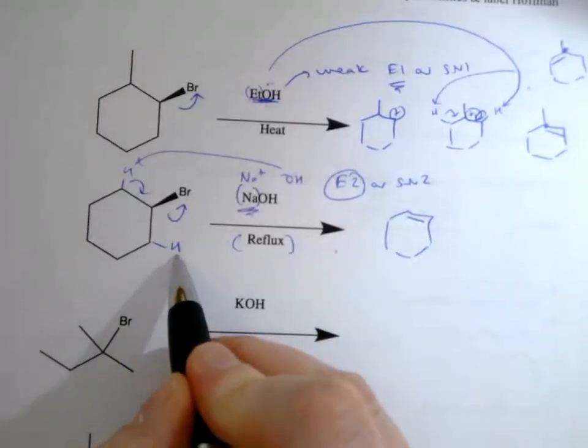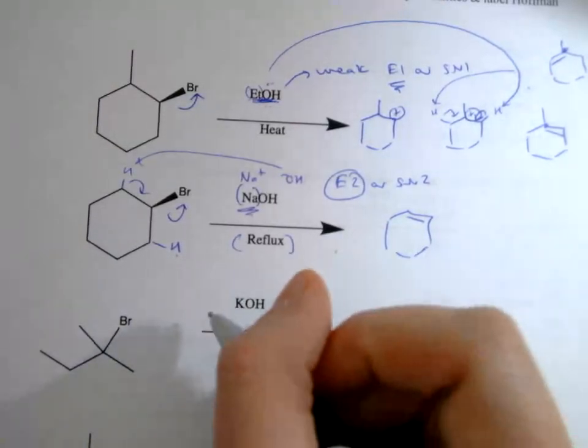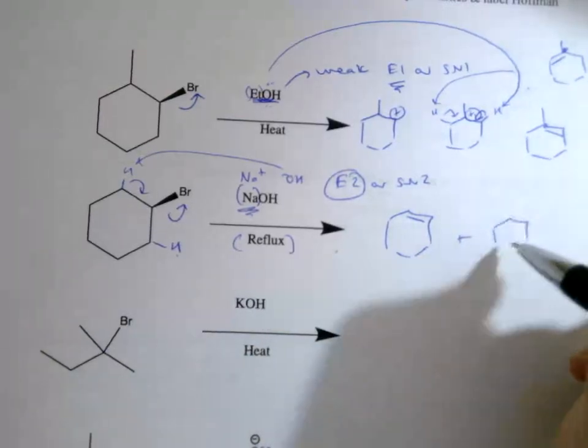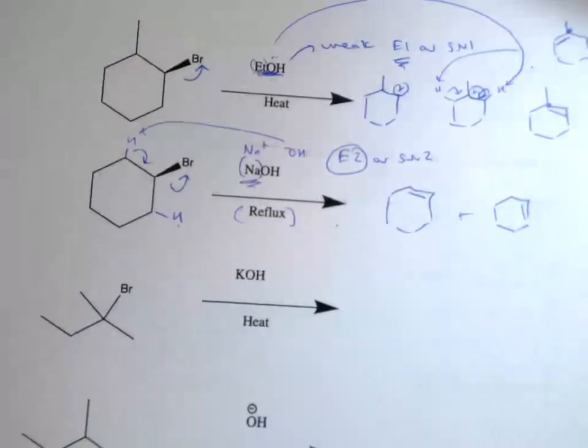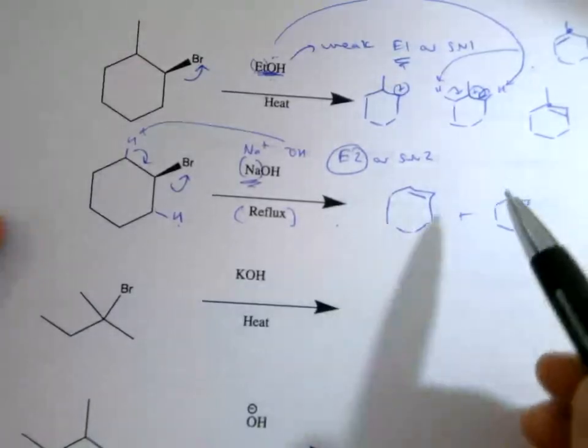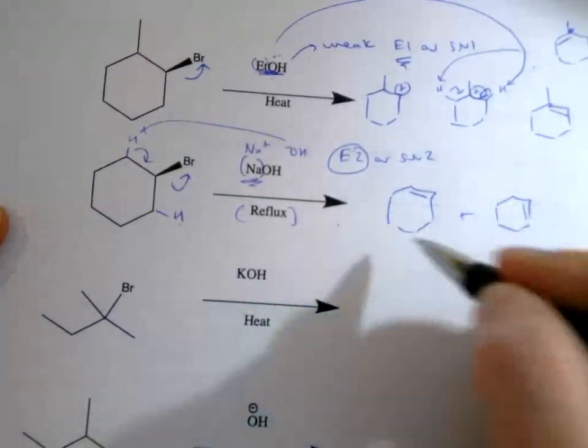If I take this hydrogen, this fills in and kicks out the leaving group, we would get a molecule that looks like that. If I took the other hydrogen right here, it would give me the same thing. Either way, it's the same. There's not a Hoffman versus Saitsev; these two are the same product, so that would be our answer.